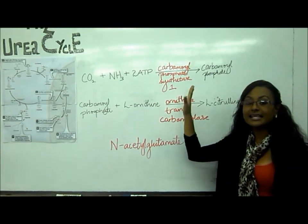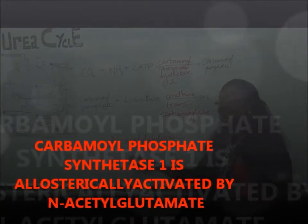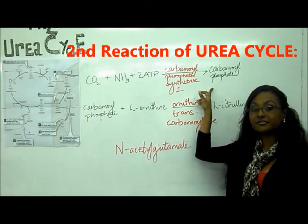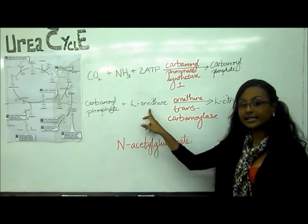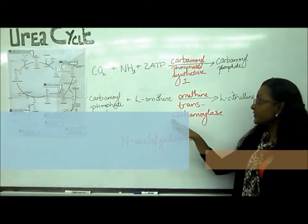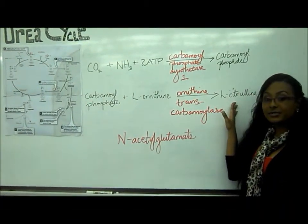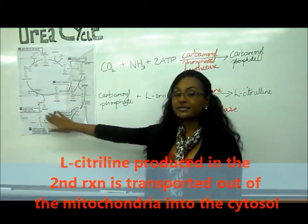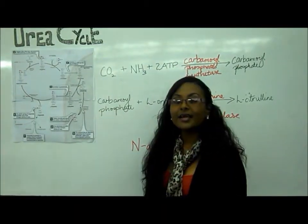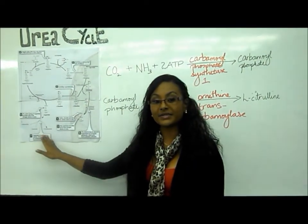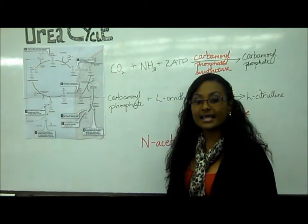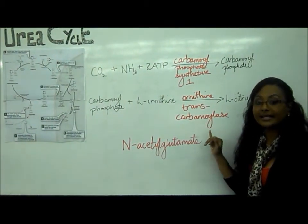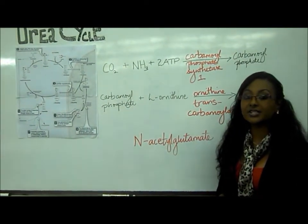Carbamoyl phosphate synthetase 1 is an enzyme that is allosterically activated by N-acetylglutamate. The second reaction of the urea cycle starts with carbamoyl phosphate, produced in the first reaction, plus L-ornithine, to form L-citrulline. The enzyme that catalyzes this reaction is called ornithine transcarbamylase. The L-citrulline produced is transported out of the mitochondria into the cytosol via a citrulline transporter. The rest of the reactions take place in the cytosol. The two urea cycle enzymes found in the mitochondria are carbamoyl phosphate synthetase 1 and ornithine transcarbamylase.